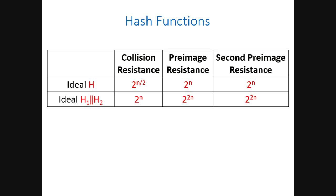Assuming h1 and h2 are ideal and unrelated, you would expect the concatenation combiner to provide security similar to a 2n-bit hash function.